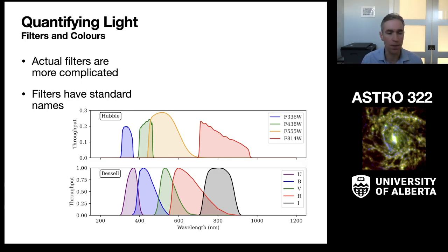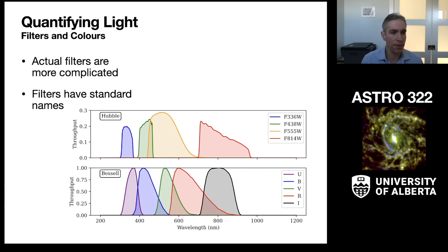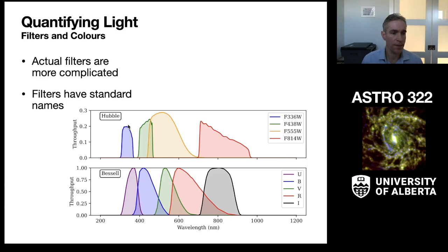I've written down two different standard filter sets. One is the filter set used on the Hubble Space Telescope — one of their primary survey cameras uses these filters. The other is called the Bessel or Johnson-Cousins filter set, which is a bit older. The Hubble filters have names like F336W or F814W, where the number is the approximate center wavelength in nanometers. So F336W has its center at about 336 nanometers, and the F814 filter has its center at about 814 nanometers.